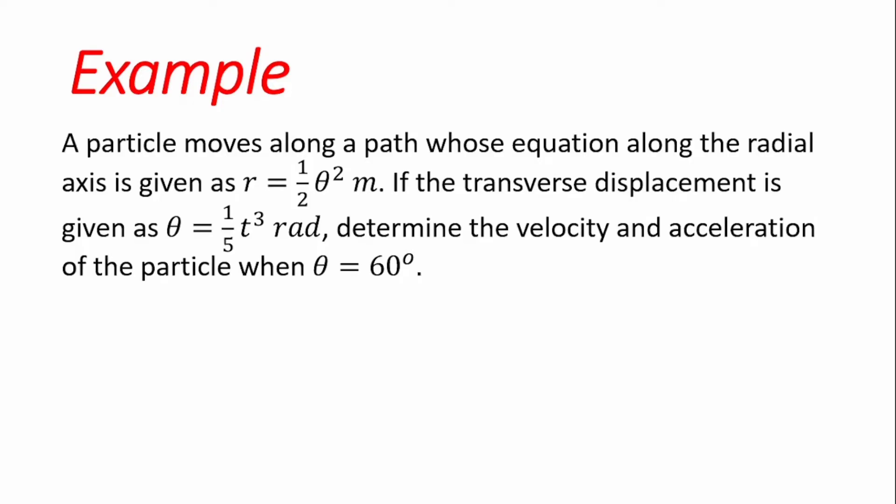We're going to walk through this example in which a particle moves along a path whose equation along the radial axis is given as r = ½θ². The transverse displacement is given as θ = (1/5)t³ radians. We're told to determine the velocity and acceleration of the particle when θ = 60 degrees.